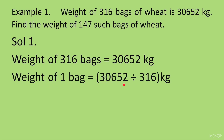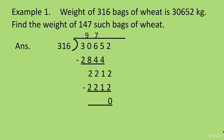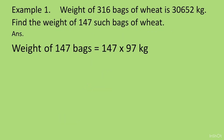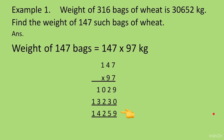We will write: weight of 1 bag is equal to 30652 divided by 316. When you divide you will get the answer as 97. So weight of 1 bag is equal to 97 kg. Now the question asks: find the weight of 147 such bags. So weight of 147 bags is equal to 147 multiplied by 97, because 97 was the weight of 1 bag. Weight of 147 bags is going to be more, so we multiply and get 14259. Write the answer properly: answer 14259 kg.